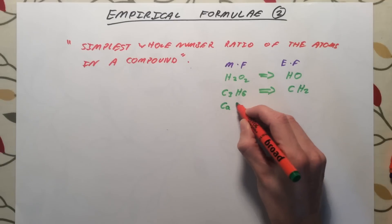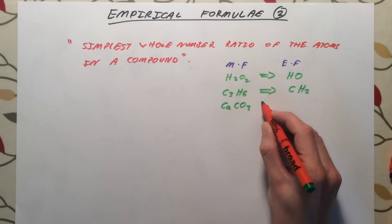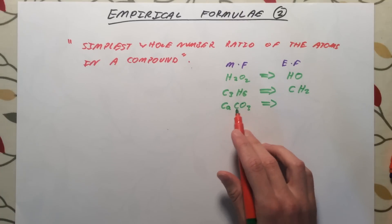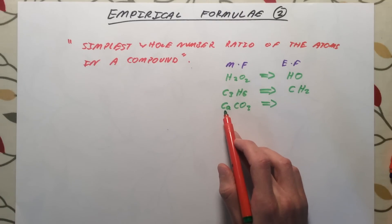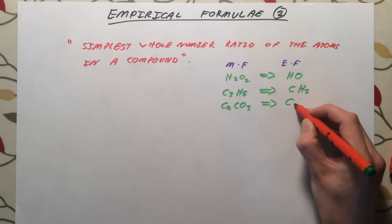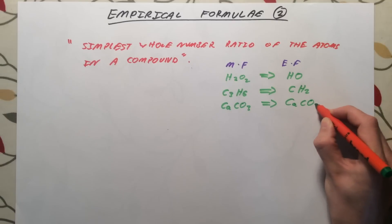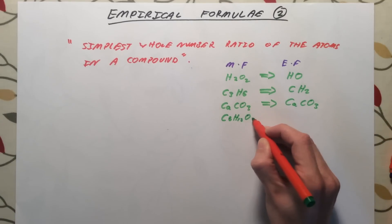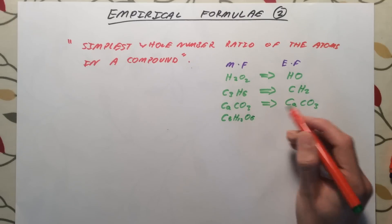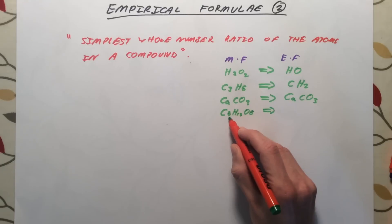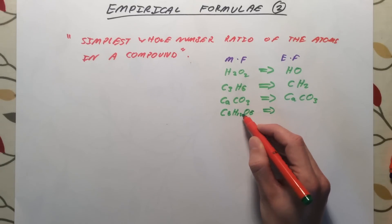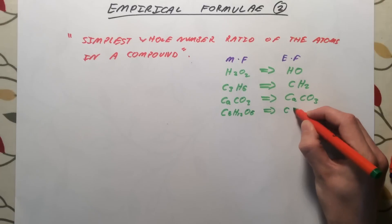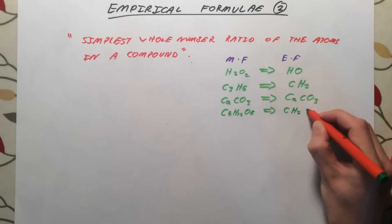A third example: CaCO3, calcium carbonate. In this case, the simplest whole number ratio of the atoms is actually exactly the same as the molecular formula — for every one calcium atom we have one carbon atom and three oxygens. One final example: C6H12O6, which is glucose. For every one carbon atom, we have two hydrogen atoms and one oxygen atom. The empirical formula is CH2O.